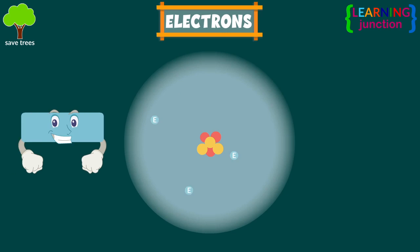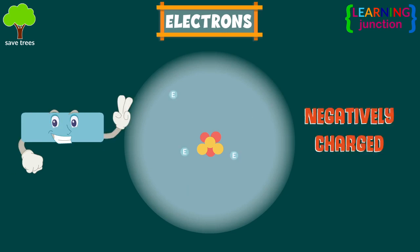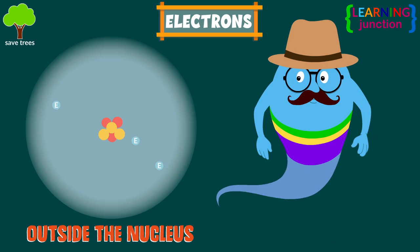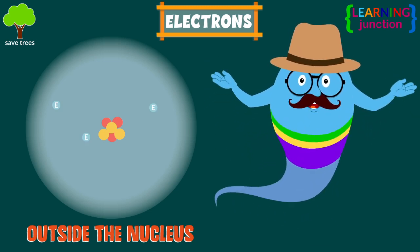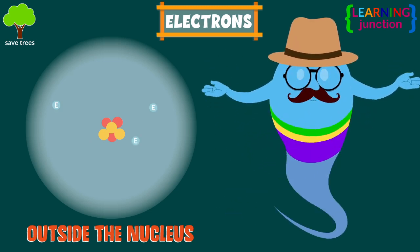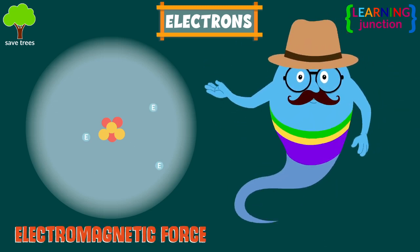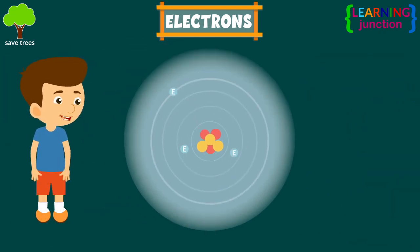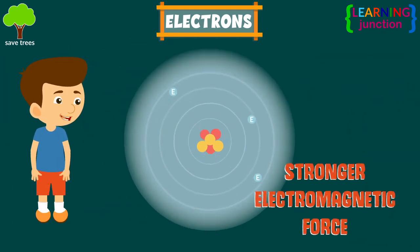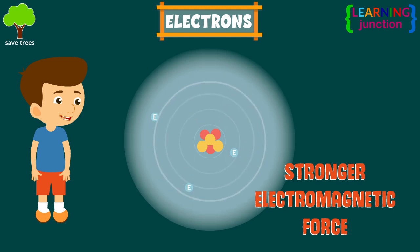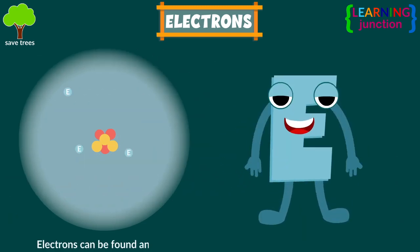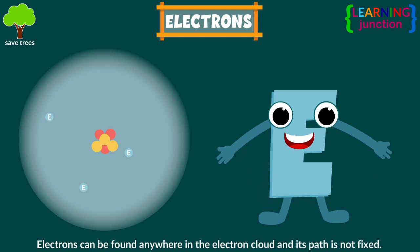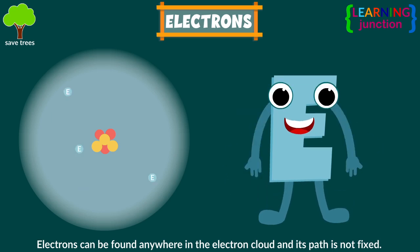An electron is a negatively charged part of the atom found outside the nucleus. They are attached to the protons in the atom with electromagnetic force. The closer the electron to the nucleus, the stronger the electromagnetic force between them. Electrons can be found anywhere in the electron cloud, and their path is not fixed.